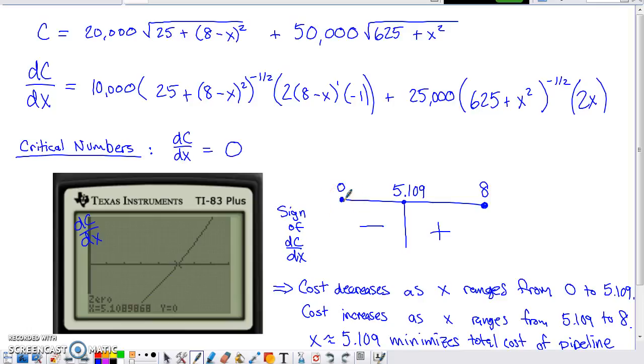I wanted to build a sign chart to analyze what's going on with the sign of dc/dx between zero and eight. dc/dx represents the rate of change of cost. What I see is going on with this graph, this is a graph of dc/dx, it's a graph of the derivative. My derivative is negative, I have negative y values on this graph from zero to 5.109. What that means is that cost, the function this is the derivative of, cost is decreasing from zero to 5.109. On the other side, we see these positive derivative values, and that indicates that cost is going to be increasing from 5.109 the rest of the way to eight.